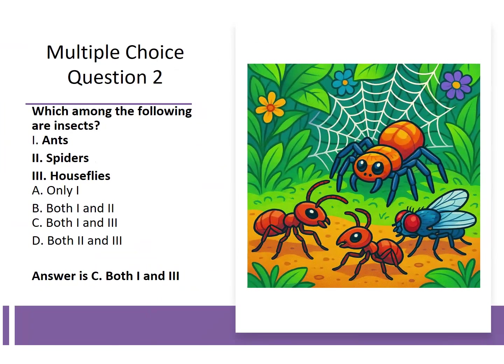Which among the following are insects? Option 1: ants. Option 2: spiders. Option 3: houseflies. The answer is C — both 1 and 3 — which means ants and houseflies are insects.